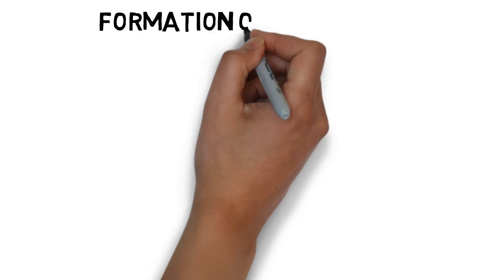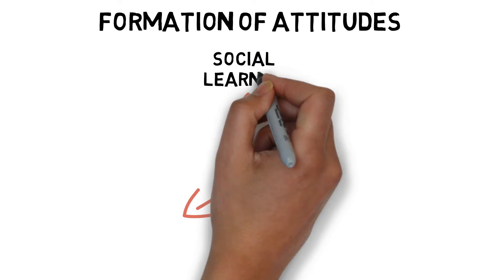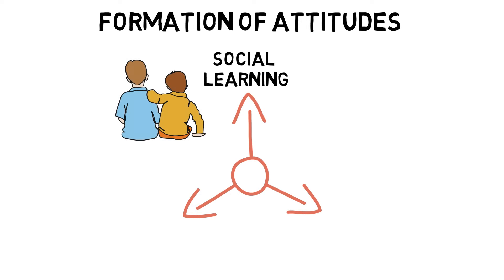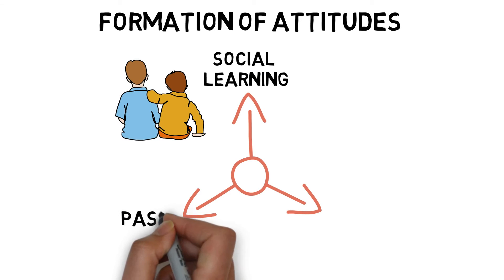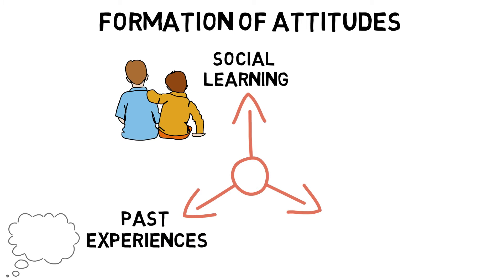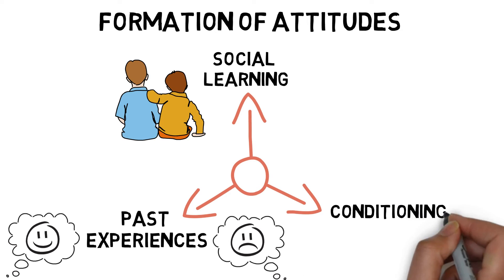Formation of attitudes can be influenced by many factors, such as social learning, where attitudes are strongly influenced by the attitudes of our peers or by imitating a significant other. Past experiences, both positive and negative. And conditioning, where attitudes can be strengthened with the use of rewards or praise.